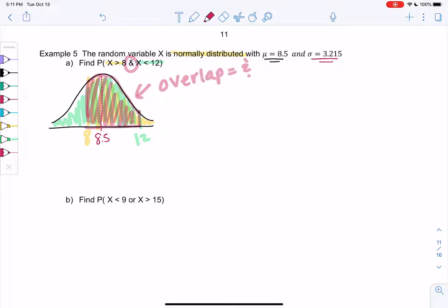If it said or, it would be different. We'll see an or in a little bit. But and is overlap. So the overlap is really just going to be in between 8 and 12.